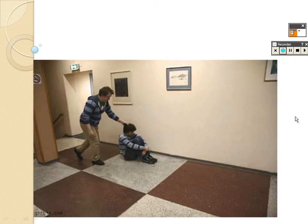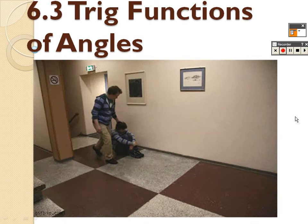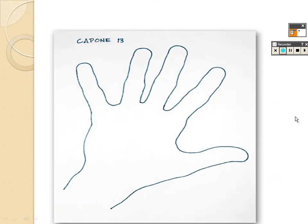We are now on section 6.3, trig functions of angles. You've got a picture of a hand, and the reason is we can find exact values of trig functions between 0 and 90 degrees using a hand. We can also find exact values of angles outside that range if we get them to fit on the hand. This is the Marzak left hand rule — you have to use your left hand to do it, which is why there's a picture of it.